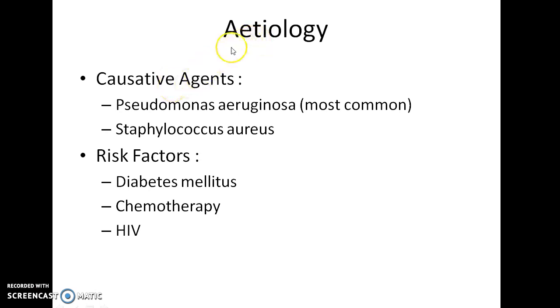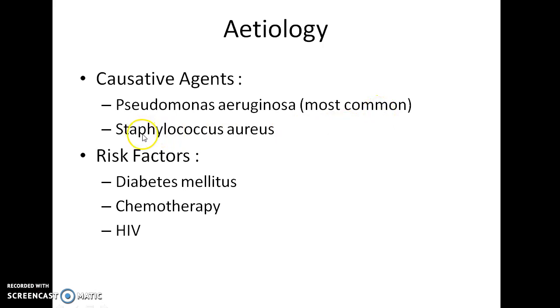Coming to the etiology of malignant otitis externa, the causative agents are Pseudomonas aeruginosa, which is the most common causative agent. It can also be caused by Staphylococcus aureus.